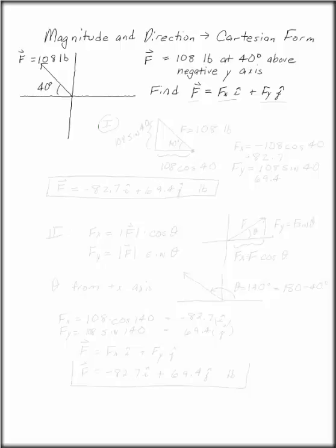We want to know what Fx and Fy are such that we can write F is Fx i plus Fy j. We're going to do this in two different ways. The first way we're going to do this is by actually drawing the triangle.